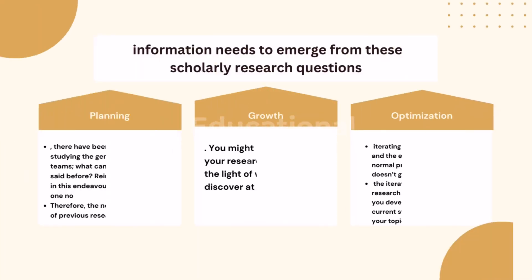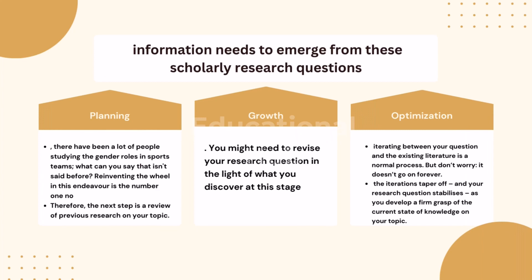In some ways, new and unique information needs to emerge from these scholarly research questions. For instance, there have been a lot of people studying gender roles in sports teams — what can you say that hasn't been said before? Reinventing the wheel is the number one thing to avoid. The next step is a review of previous research on your topic. You might need to revise your research question in light of what you discover. Iterating between your question and the existing literature is a normal process, and the iterations taper off as your research question stabilizes and you develop a firm grasp of the current state of knowledge on your topic.